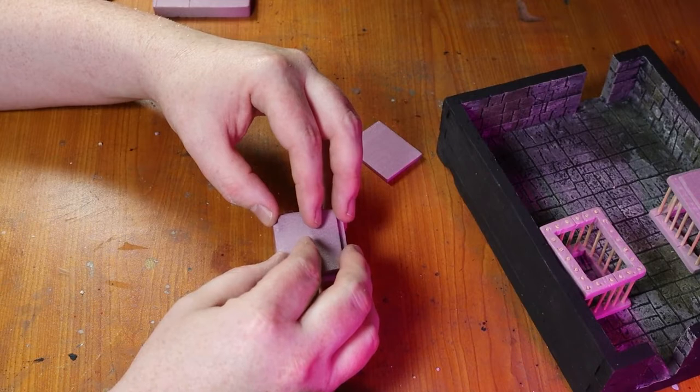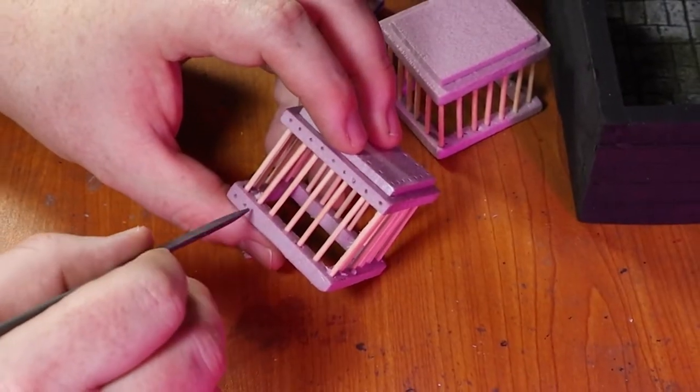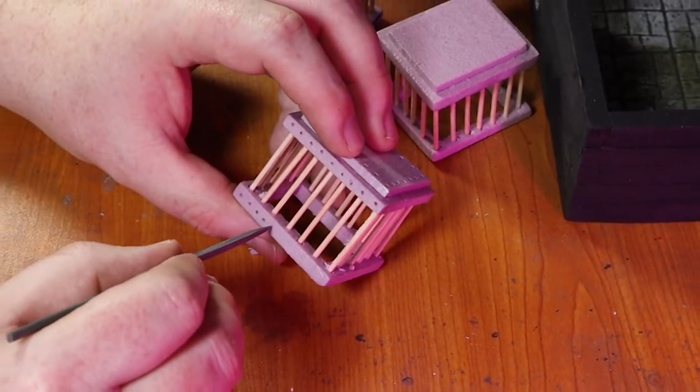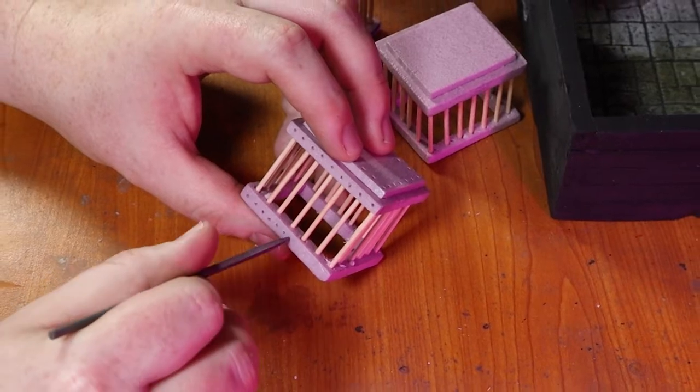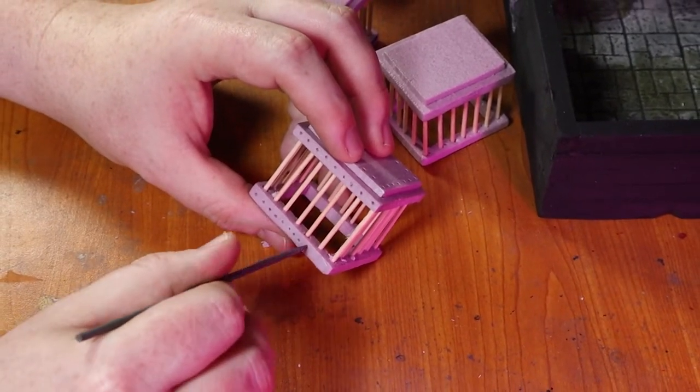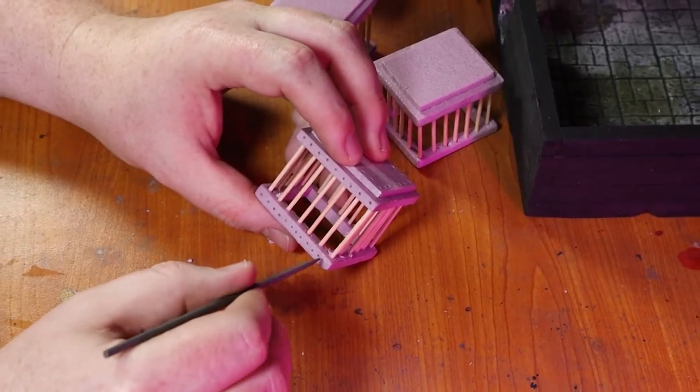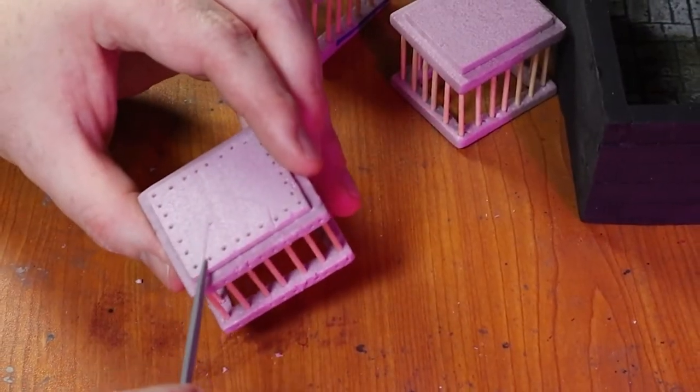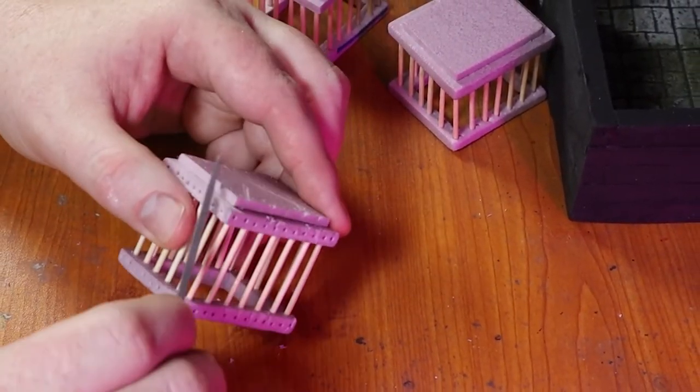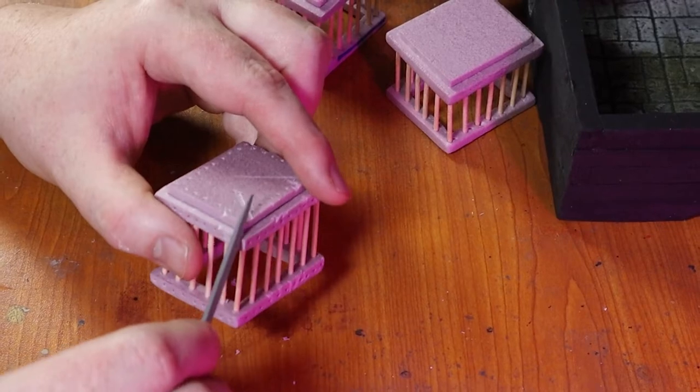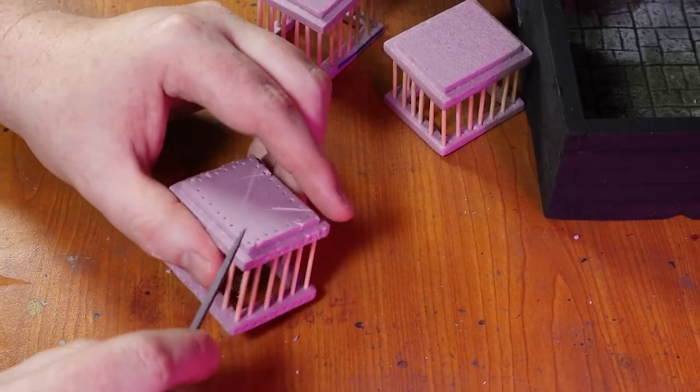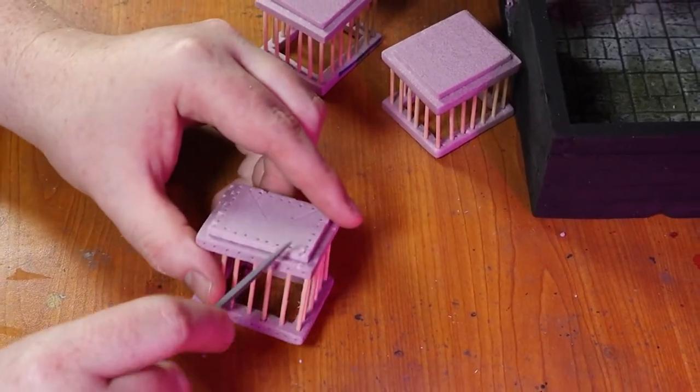Then I go along each of the cells and add a little bit of decoration by doing these indents that are going to look kind of like rivets. It's just going to help the metal look a little bit more like it's manufactured. Then I take my file and add some gouges because I don't want these to be brand new cages—after all, it's probably been hundreds of years since these have been used.